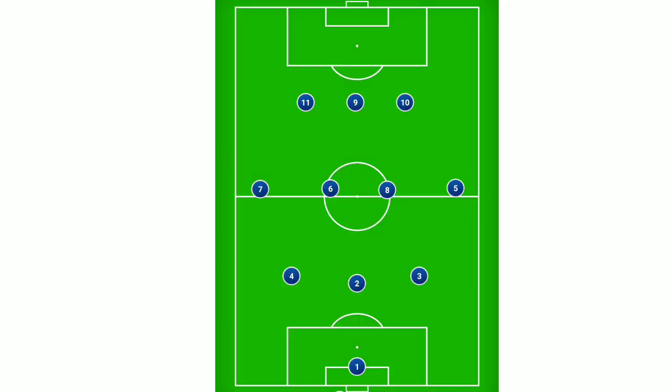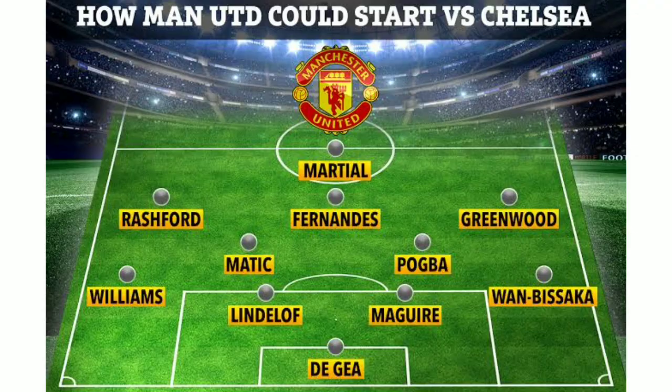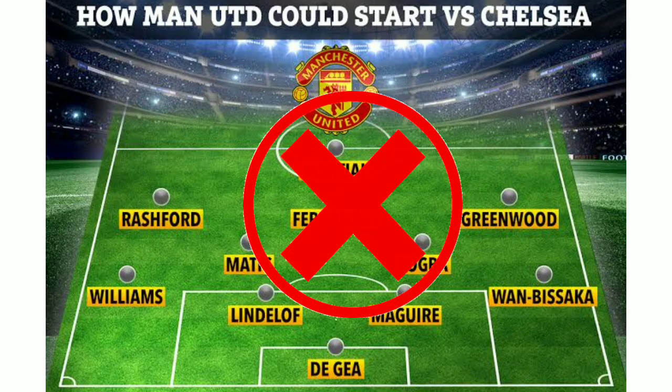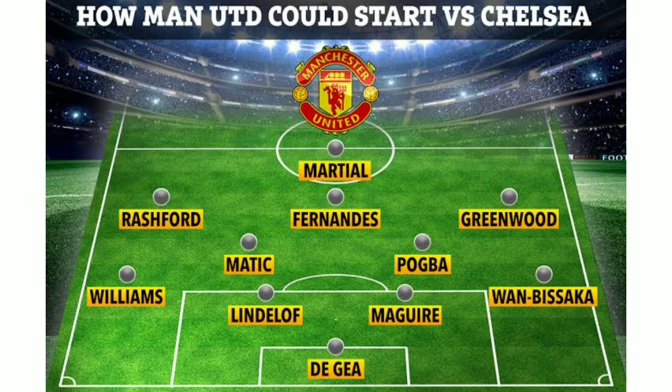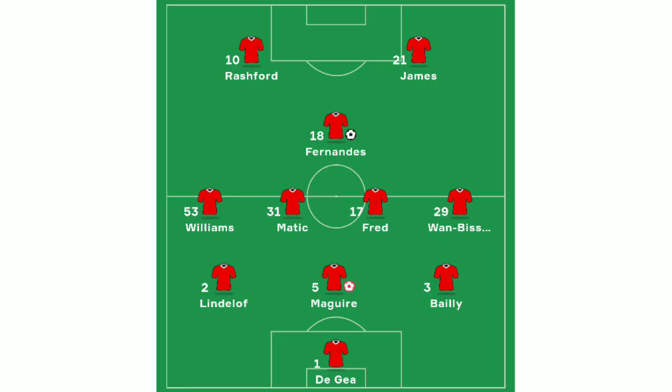Chelsea had a 3-4-3 formation while United lined up with a 5-2-3 formation. Chelsea had decent discipline in the 25th season. Every year they played a 4-2-3-1, but this time they used a 3-4-1-2 formation.